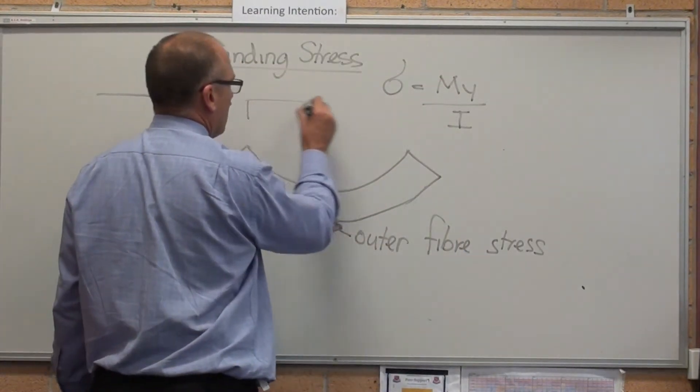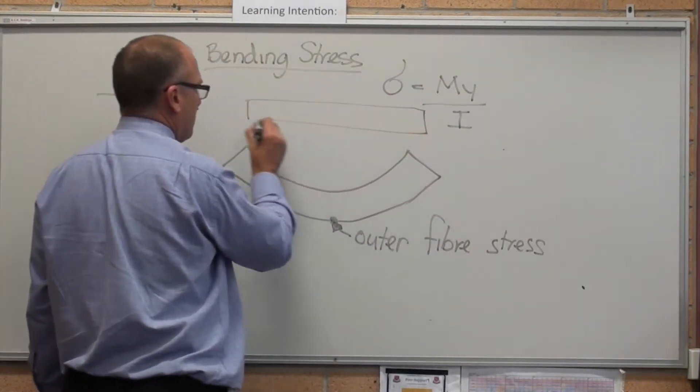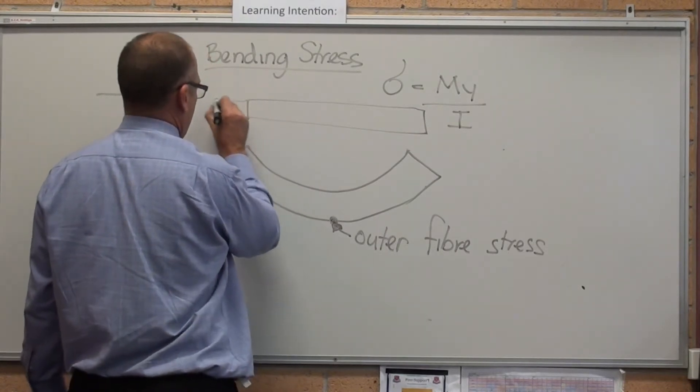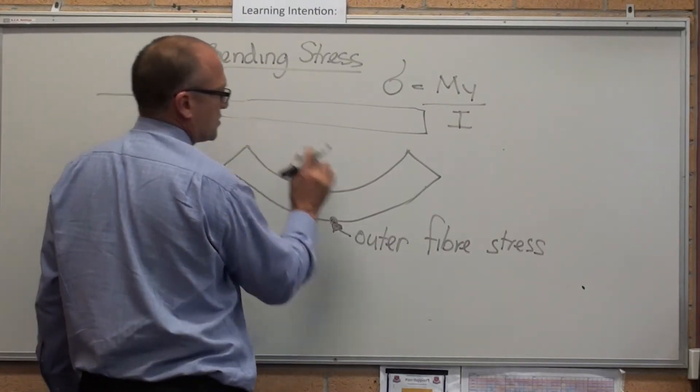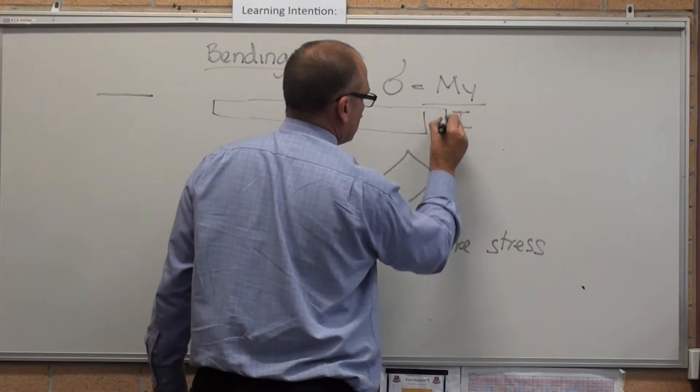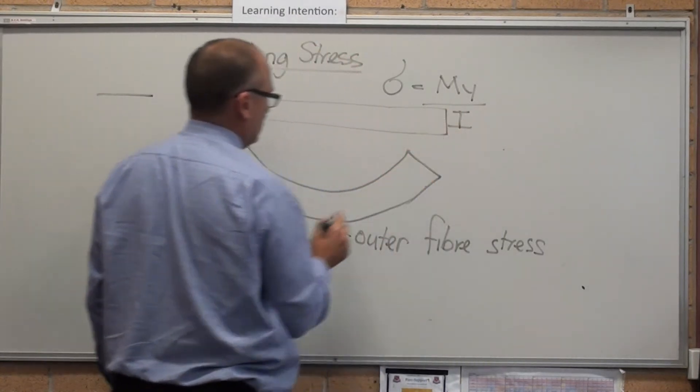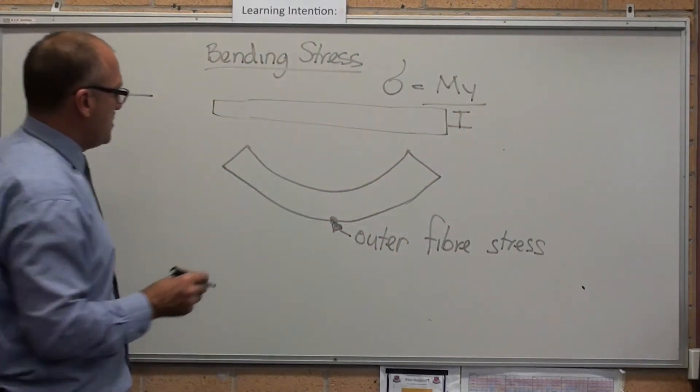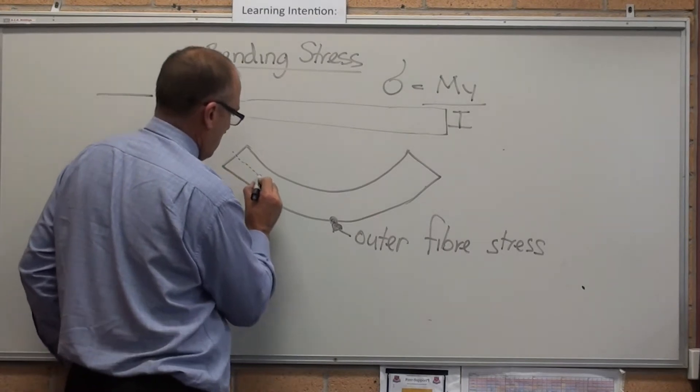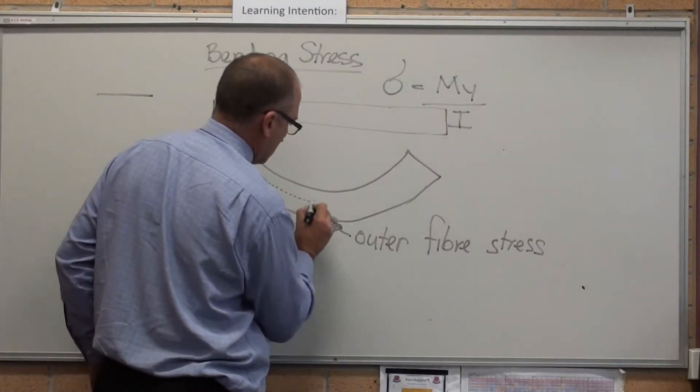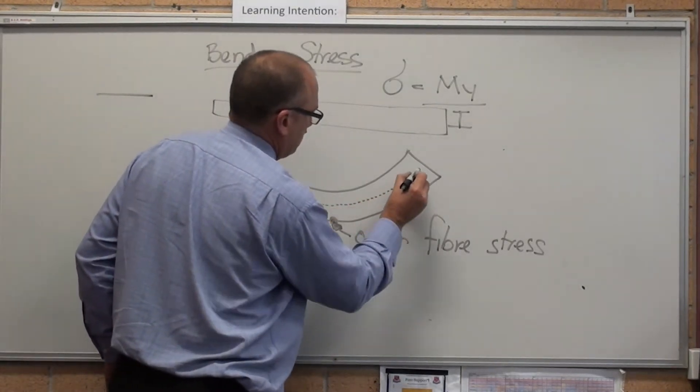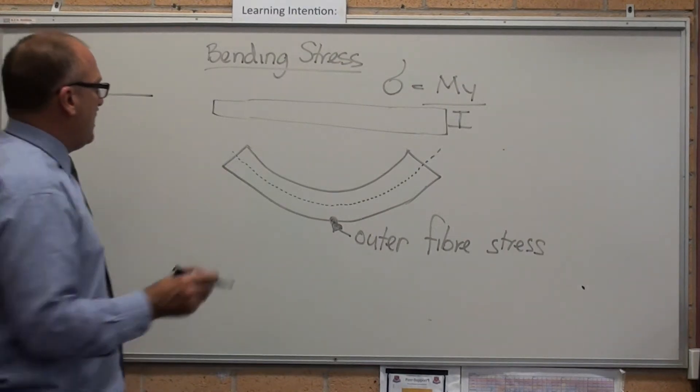If I had this one here, it might have been a rectangular beam, the same length as that one. When I bend it, I'm going to just put a dotted line across the middle. When I bend that, that dotted line is that dotted line.